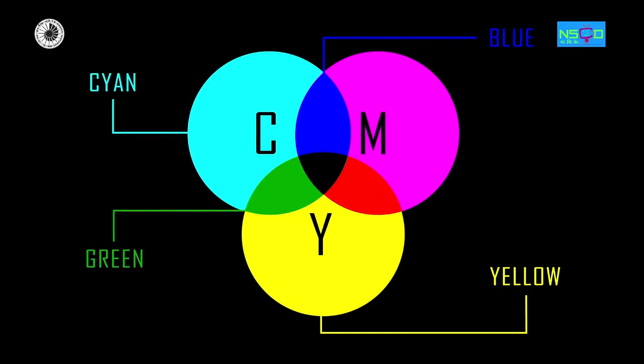If white light interacts with the primary colours of pigments, primary colours of light are removed. This is why these colours are called subtractive primaries.